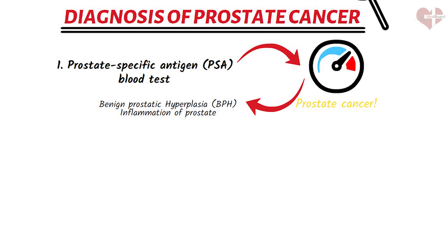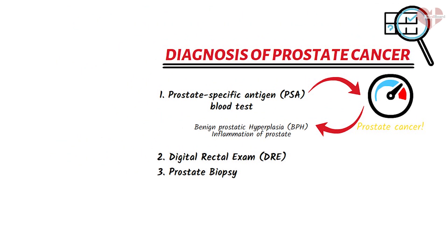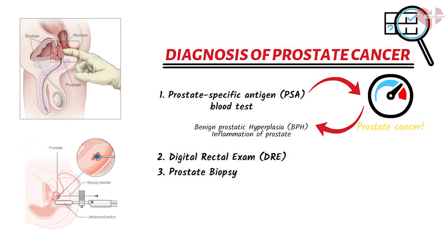If a PSA test result is elevated, a healthcare provider may recommend further testing, such as a digital rectal examination (DRE) or a prostate biopsy. During a DRE, the healthcare provider will insert a lubricated gloved finger into the rectum to feel for any abnormalities in the prostate gland, such as lumps or hard areas. A prostate biopsy involves taking small tissue samples from the prostate gland using a needle, which are then examined under a microscope for the presence of cancer cells.